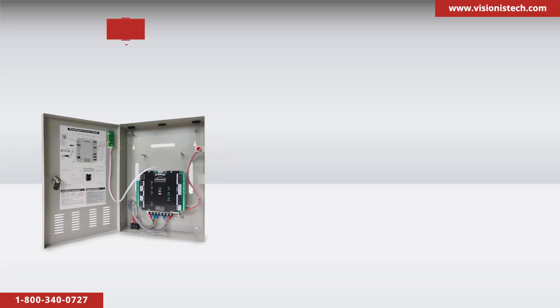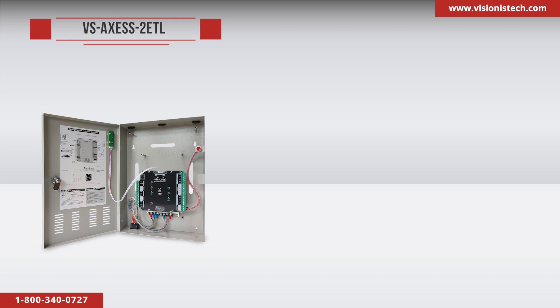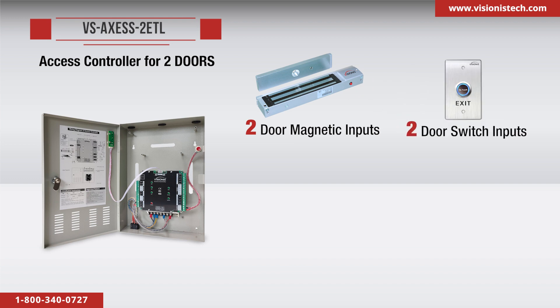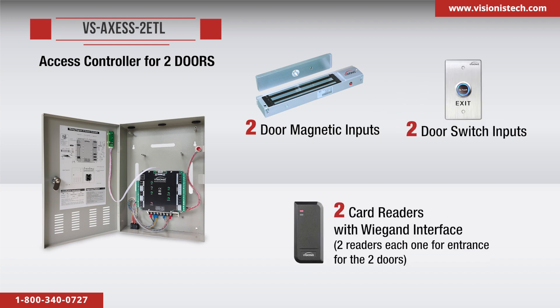The VS Access 2 ETL version 2 is an access controller for two doors. This system can connect up to two door magnetic inputs, two door switch inputs, and two card readers with Wiegand interface — two readers, each one for entrance for the two doors, or one for entrance and one for exit for one door.